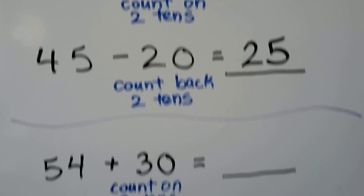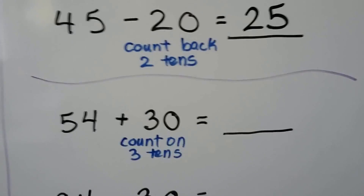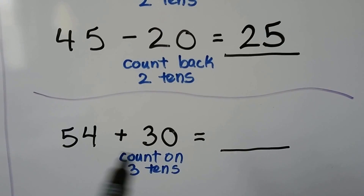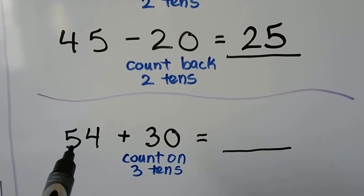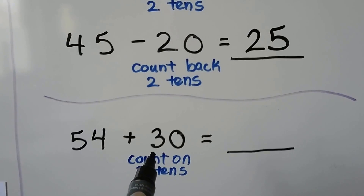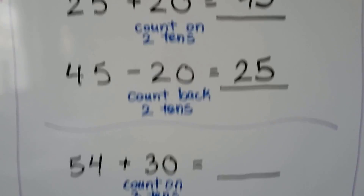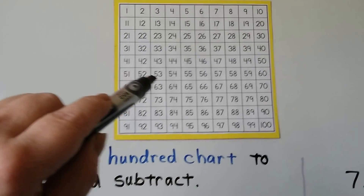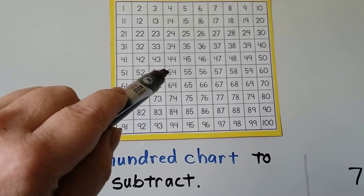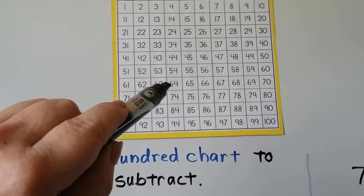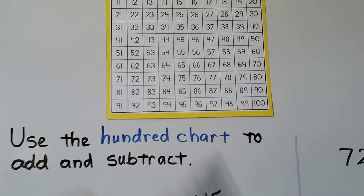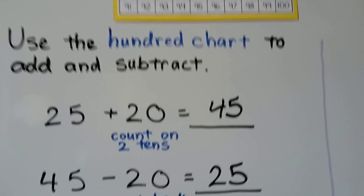Let's try again. We have 54 plus 30. We start at 54 and count on three tens for the 30: 64, 74, 84. The answer is 84.